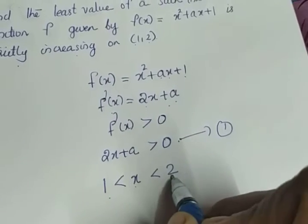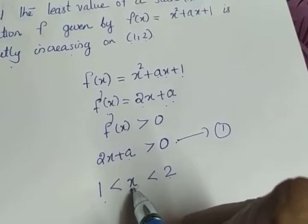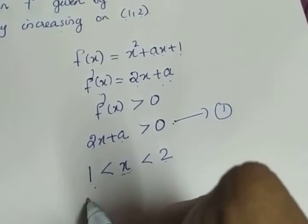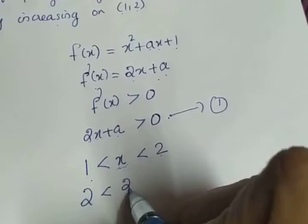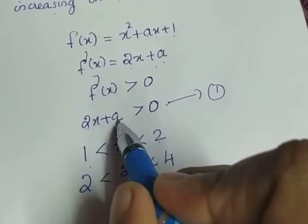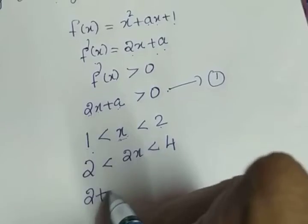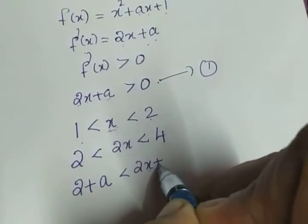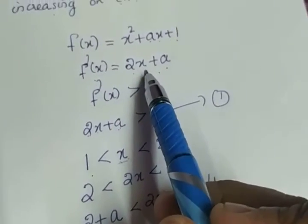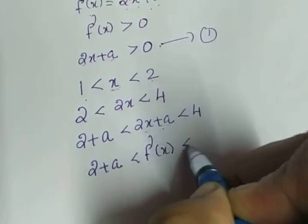What we are going to do is convert the middle term x. Since we have 2x, we multiply the inequality throughout by 2, giving 2 < 2x < 4. We need the term 2x + a, so we add a to all terms of the inequality. What we get is 2 + a < 2x + a < 4 + a. And 2x + a is f'(x). So we are getting 2 + a < f'(x) < 4 + a.